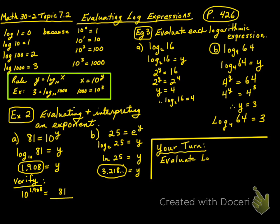Your turn: evaluate log base 3 of 27. You can stop, complete it, and then continue. Log base 3 of 27 is equal to y. 3 to the power of y is equal to 27. And since 3 to the power of y is 3 to the power of 3, y will equal 3.